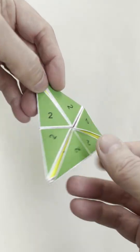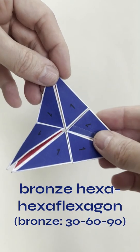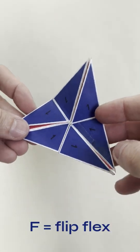But there's a quicker way to get to that arrangement if we make our hexahexa-flexagon from bronze triangles and use the flip flex. First, push in in the middle of the edge.